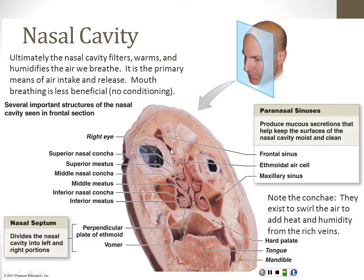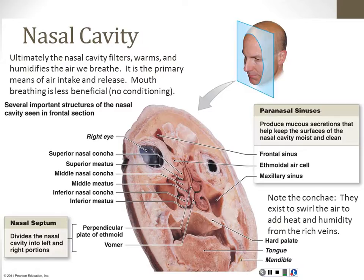The last thing the nasal cavity does is filter the air. We talked about the mucociliary escalator last time — well, particulates get filtered in the nasal cavity even before they get down to the rest of the respiratory tract. Evolutionarily, this makes sense because it's easier to get mucus out of the nasal cavity than out of the lungs — in the lungs you've got to cough it out, but in the nasal cavity you can blow it out. So when you blow your nose, you're cleaning the filter.